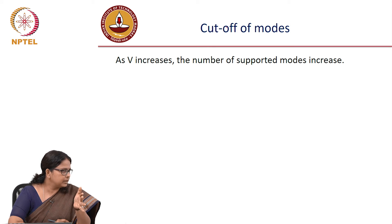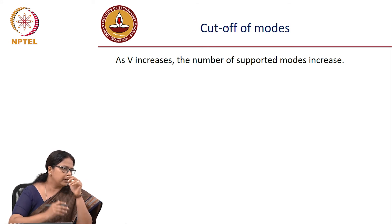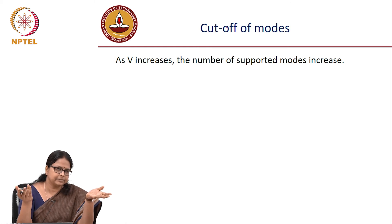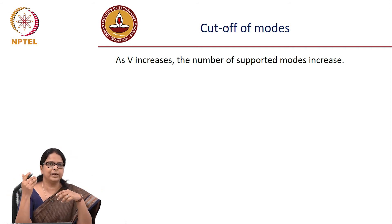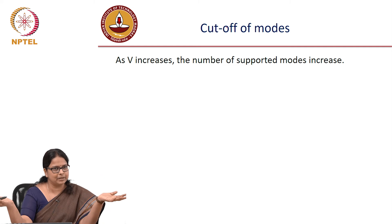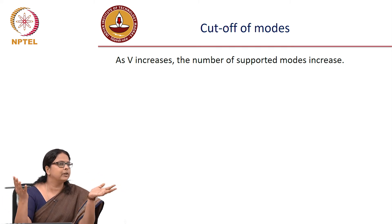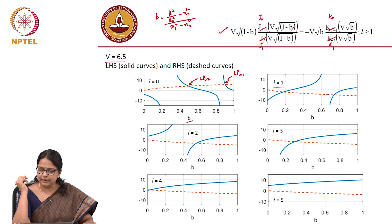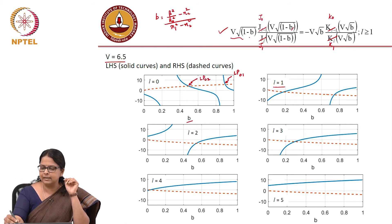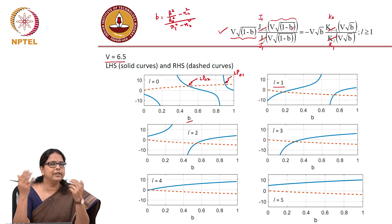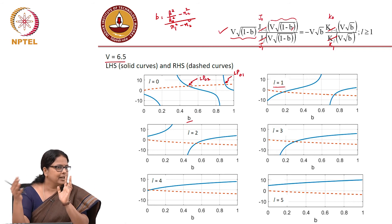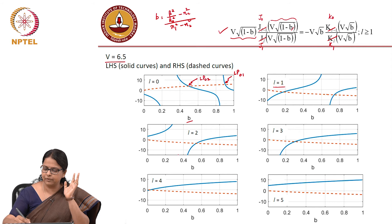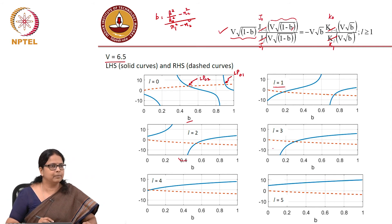Why does the number of modes increase with V? The diameter could increase, the numerical aperture could increase, lambda could decrease — V can increase for multiple reasons. But mathematically, as your V increases the argument changes, and the number of zeros and infinities in your Bessel function on the left-hand side increases. You have multiple families of curves, and that increases your number of solutions. So the observation is: as V increases, the number of supported modes increases.